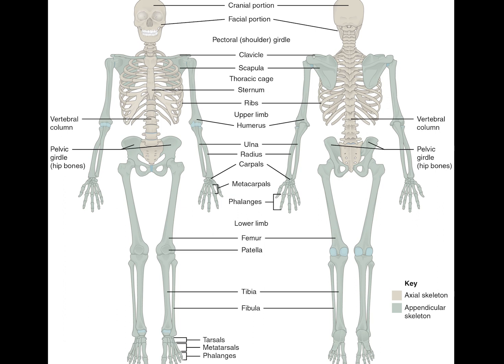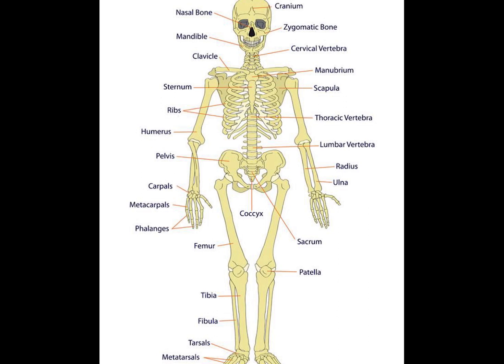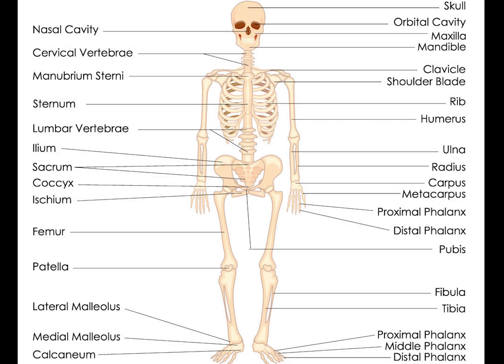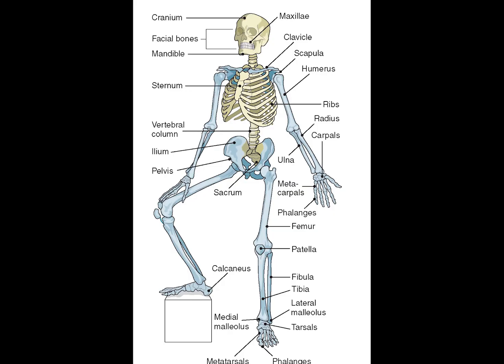Bones are rigid organs that form part of the endoskeleton of vertebrates. They provide structural support for the body, assist in movement by opposing muscular contraction, and create a protective wall around internal organs. Bones are primarily made of inorganic minerals, such as hydroxyapatite, while the remainder is made of an organic matrix and water. The hollow tubular structure of bones provides considerable resistance against compression while staying lightweight.